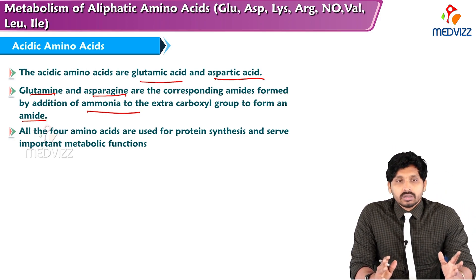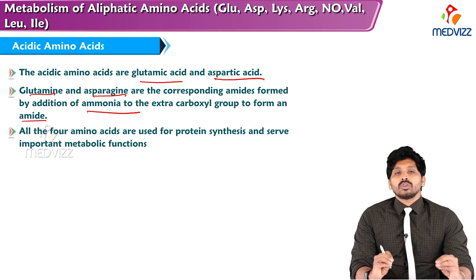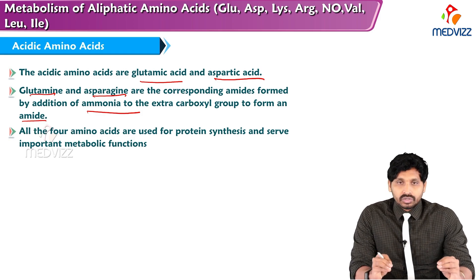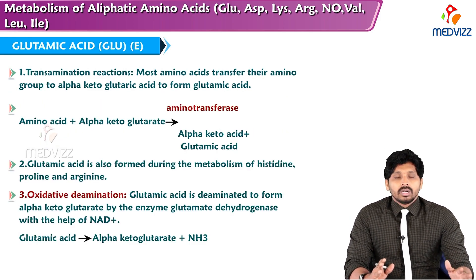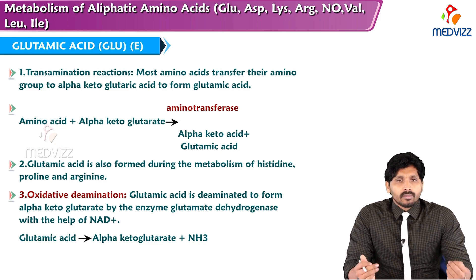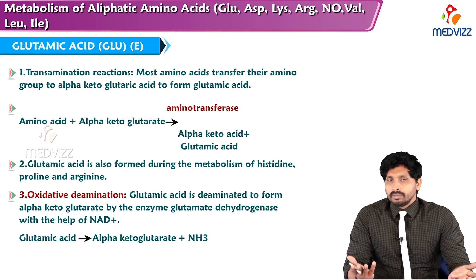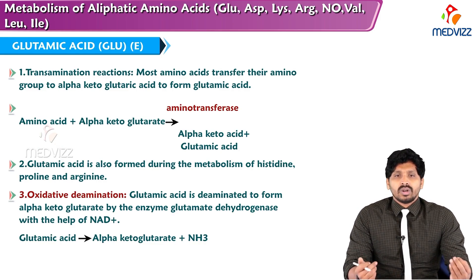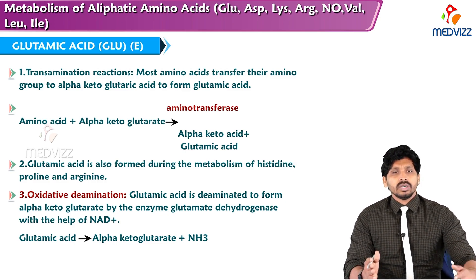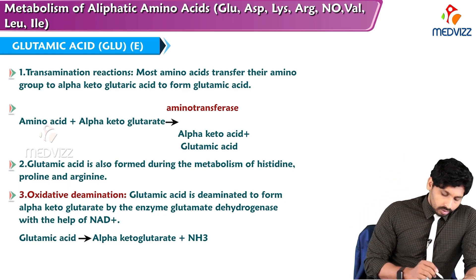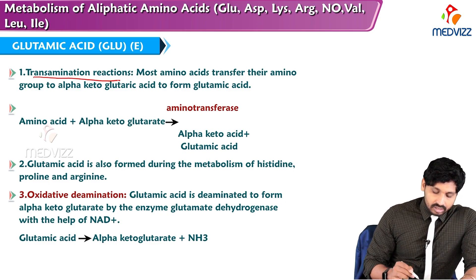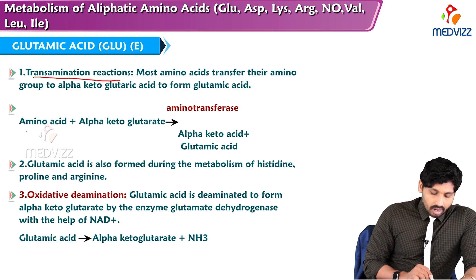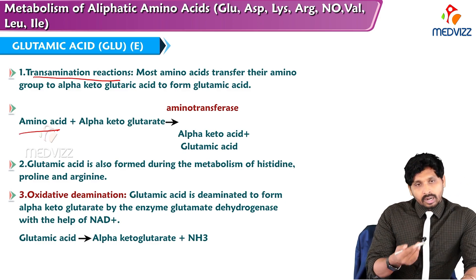All four amino acids are used for protein synthesis and serve important metabolic functions. Glutamic acid is a non-essential amino acid because in our body, through transamination reactions, we are able to produce glutamic acid. The main source of glutamic acid is transamination reactions where amino groups from other amino acids are transferred.